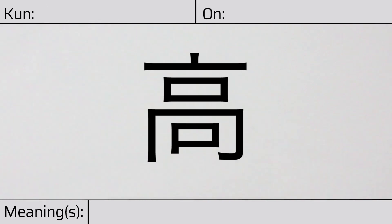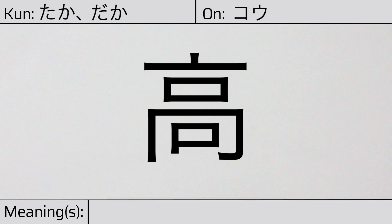Welcome to this lesson on Japanese kanji. Today, we'll be discussing this character. This kanji has kunyomi, or Japanese readings of taka or daka. And it has an onyomi, or Chinese reading of kau. This character has the meanings tall, high, or expensive.